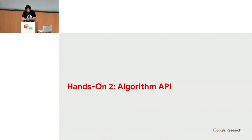Now I'm going to go into the algorithm API. This is more for researchers who want to use this to write their own algorithms, especially using our Bayesian optimization library, and to test their own algorithms.